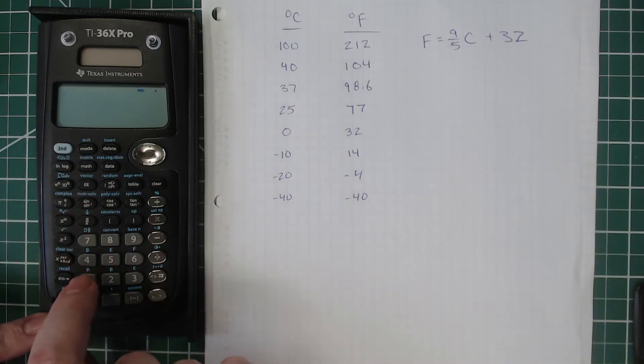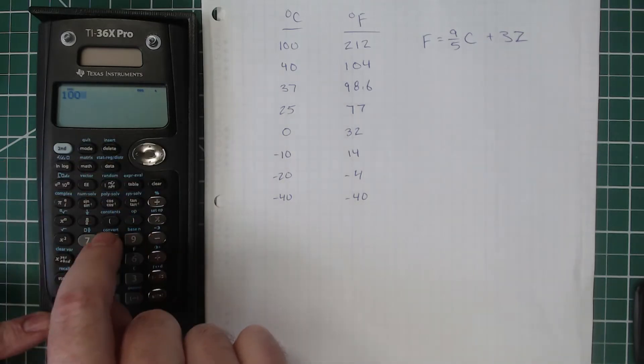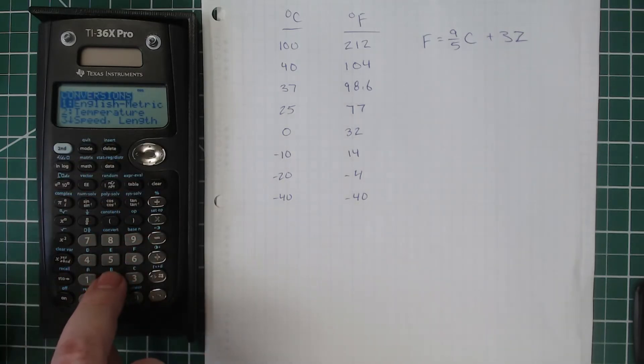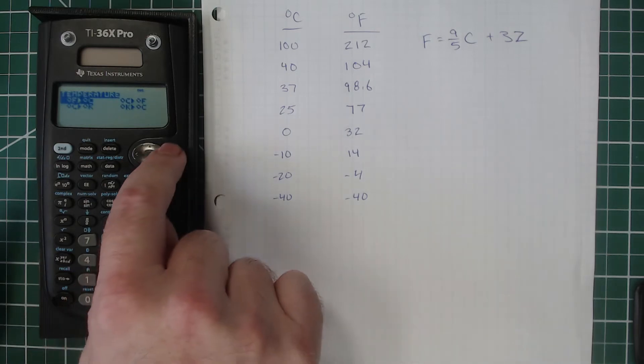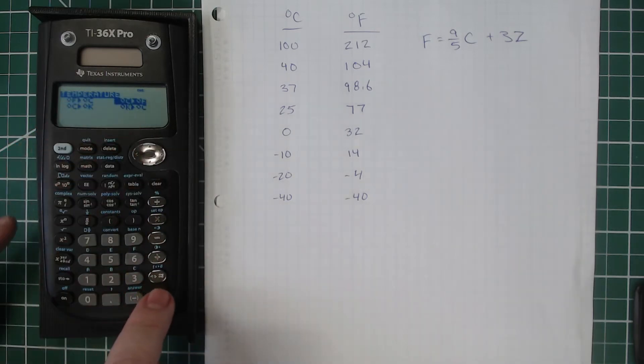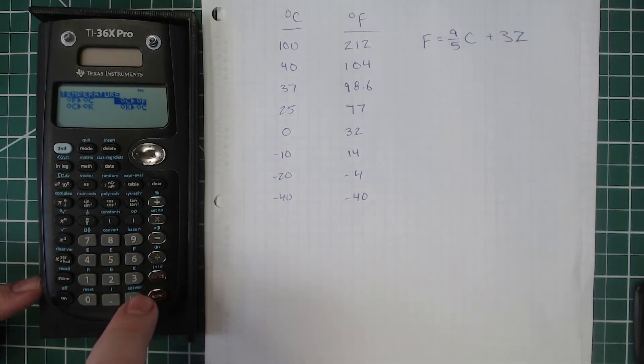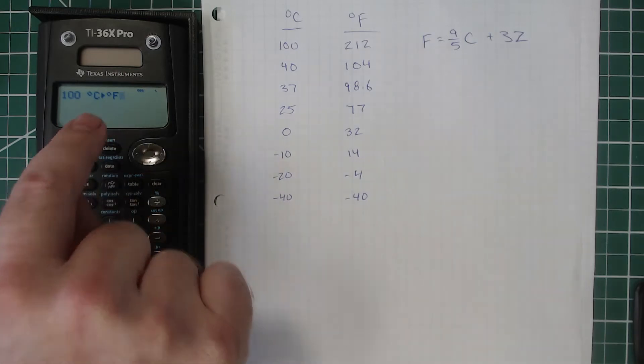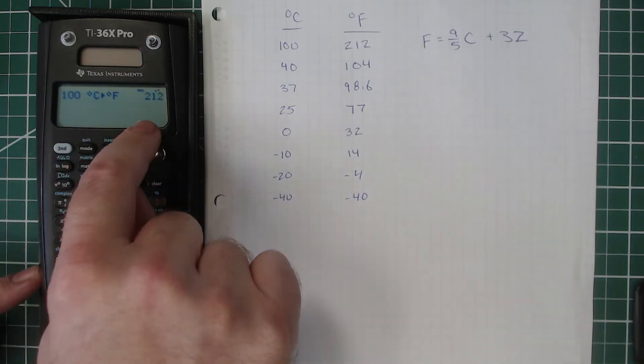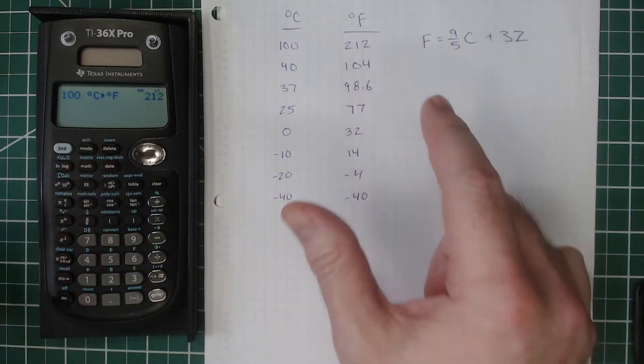Let me show you how it works. So if you type in 100, second, convert, and then you choose the second menu item and then scroll over and find where the degrees Celsius to Fahrenheit is and put enter, you will get this little function that comes up. And when you hit enter, it will convert it to the correct number. Great little feature.